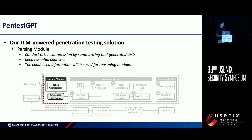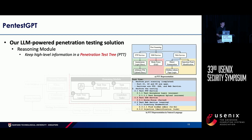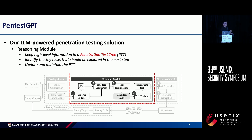The parsing module overcomes the token length limit within large language models, since all different test tools generate very long results that would overfit the token limit if fed in directly — so it condenses only the key information from test results. The reasoning module keeps high-level information in a penetration testing tree, an abstract tree structure in natural language format. It analyzes the condensed information from the parsing module, updates the tree, and reasons about what is the most valuable next step in the pen testing procedure.